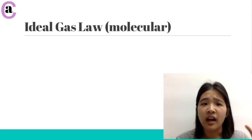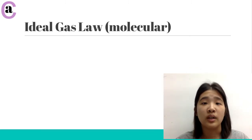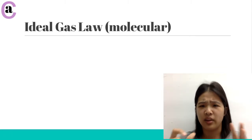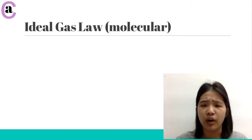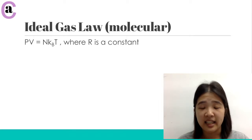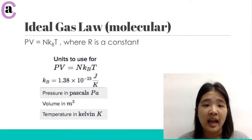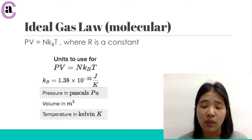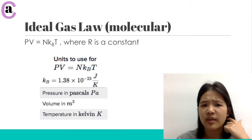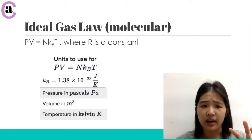For the other version of the ideal gas law, it's molecular. This is when you would be looking for the concentration or the amount of your gas in the number of molecules. So instead of PV equals nRT, you have PV equals NkT, where the big N is the number of molecules and the little k with a subscript b is going to be your constant. Here are some of the units you can use with this version.